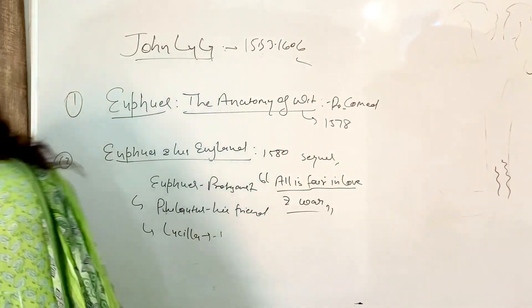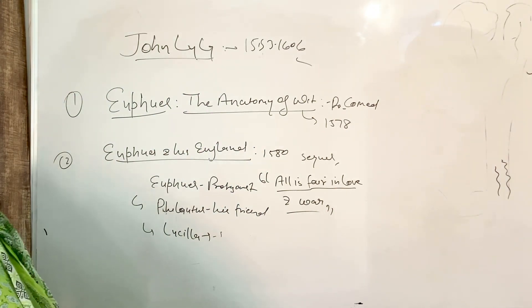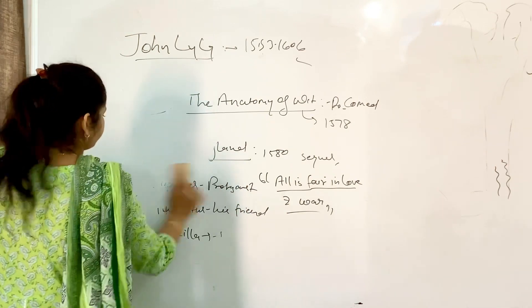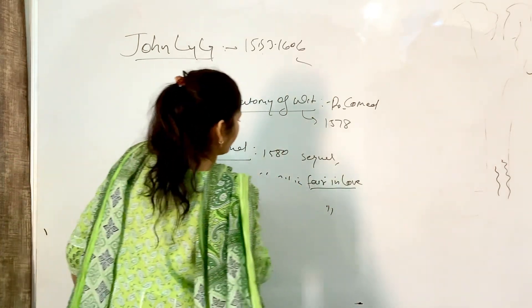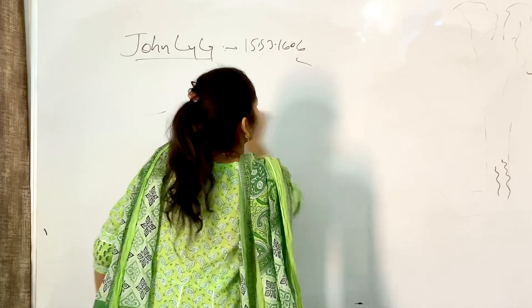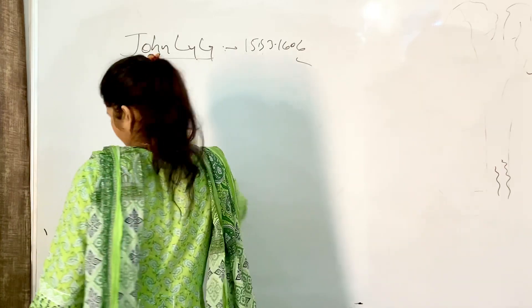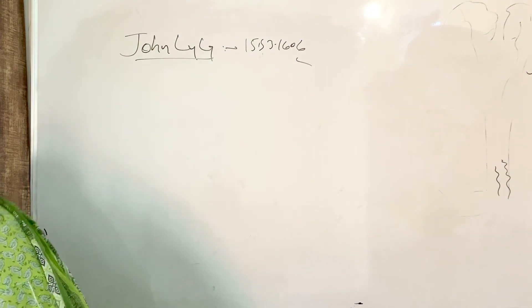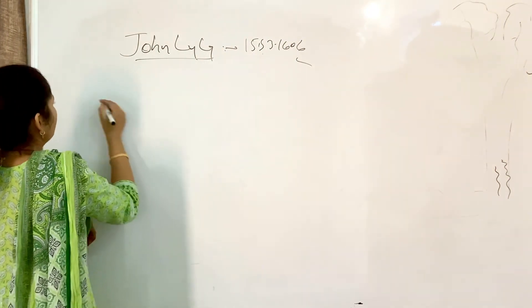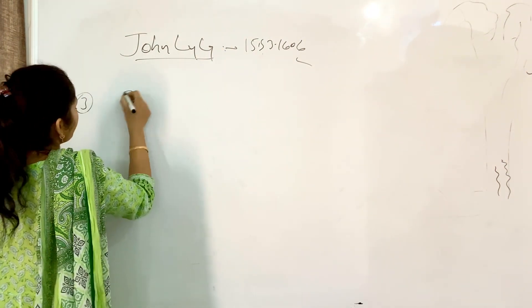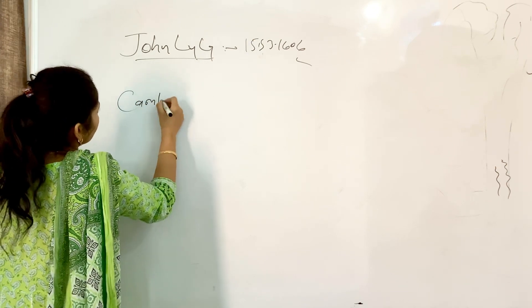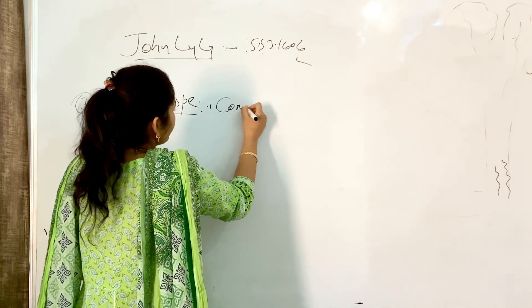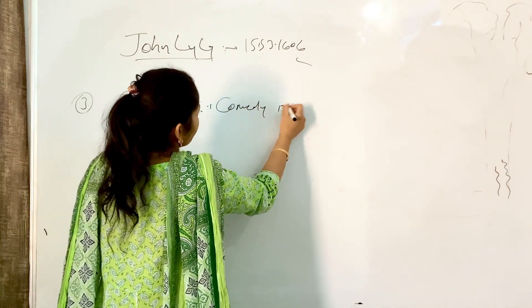The next work that is also very important is his third play, Campaspe. This is a comedy that was published in 1584.